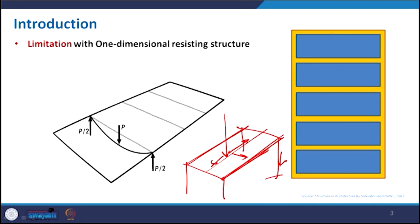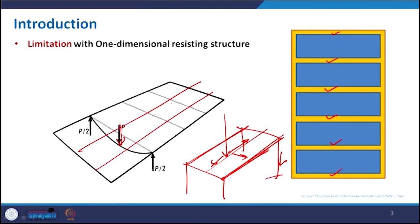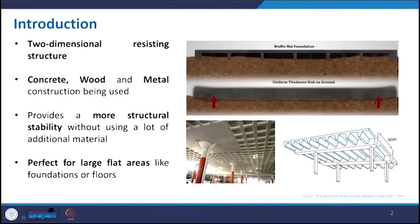Here you can see a rectangular slab where beams are provided parallel in one direction — either in X or in Y. The problem with this one-dimensional arrangement is that whenever you apply a point load, the corresponding beam gets much more deflection, while the other parallel beams show very little deflection. So the structure will not act very efficiently, and we are restricted to reducing the span of the room. To overcome that, we can add members and make a grid form, so the load will be distributed in a better way.